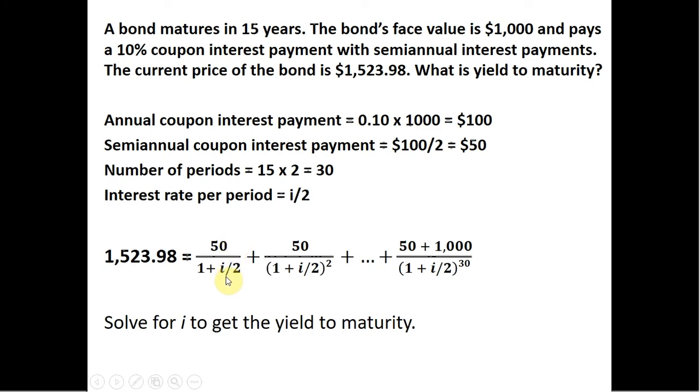Here we have I divided by 2 to account for the semi-annual payment nature, and we do this for 30 periods. In the final 30th period, we'll get our interest payment, and we'll also get the face value of the bond back. Our goal is to solve for I, to get the yield to maturity.